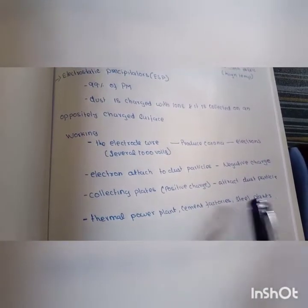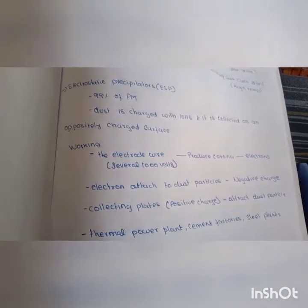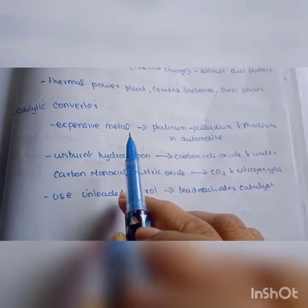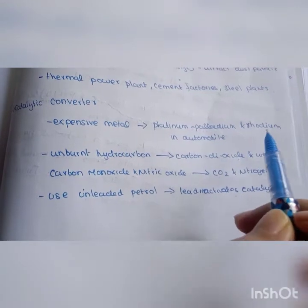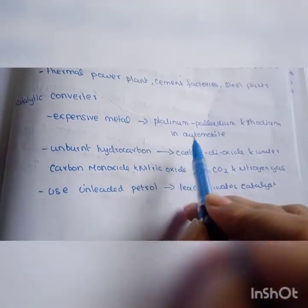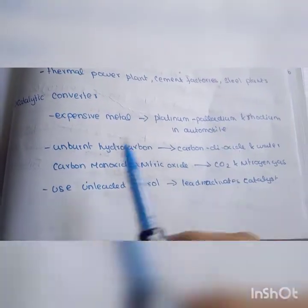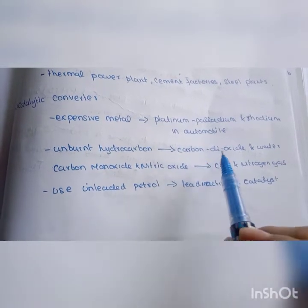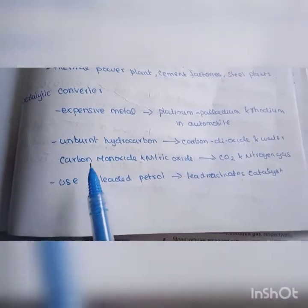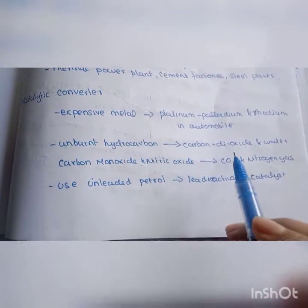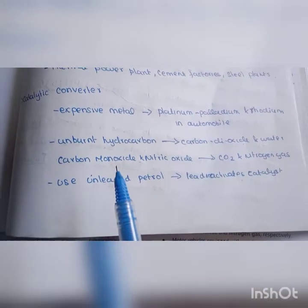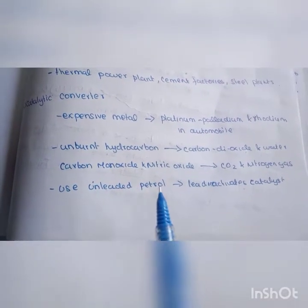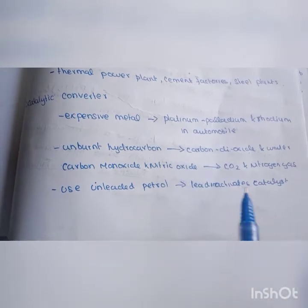In catalytic converters, expensive metals like platinum, palladium and rhodium are used in automobiles. They convert unburned hydrocarbons to carbon dioxide and water, and carbon monoxide and nitric oxide to carbon dioxide and nitrogen gas. Unleaded petrol is used as catalyst.